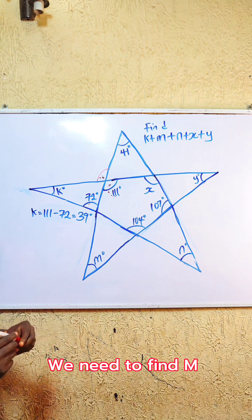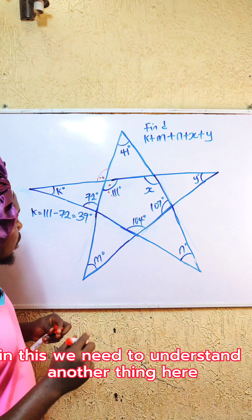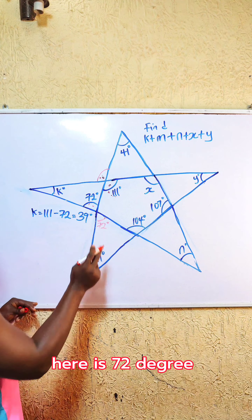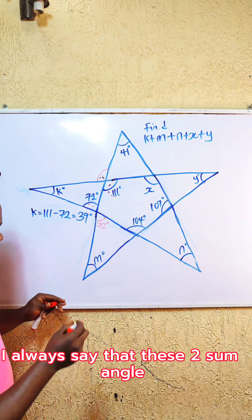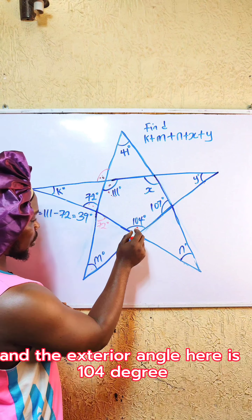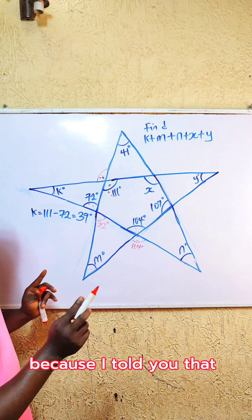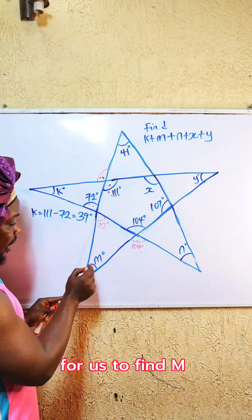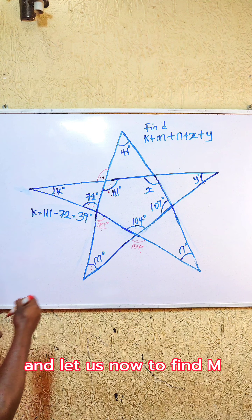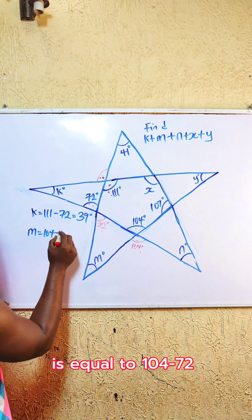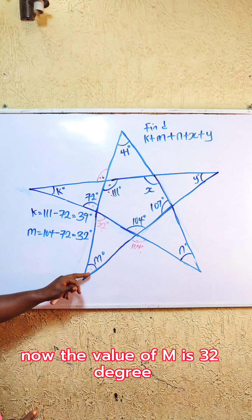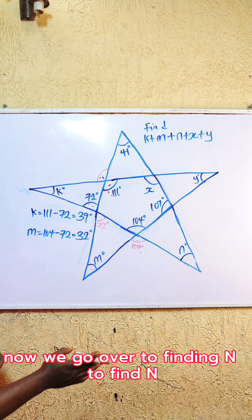Now we go over to find m. To find m, we need to understand that this angle is 72 degrees — these two angles are equal. Using the same rule — two interior angles equal the exterior angle — the exterior angle here is 104 degrees. So to find m: m = 104 minus 72, which gives us 32 degrees. The value of m is 32°.